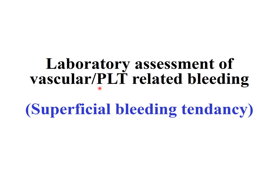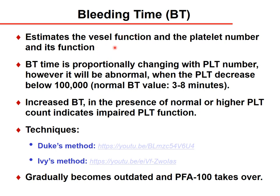The laboratory assessment of vasculature and platelet-related bleeding usually causes a superficial bleeding tendency. The bleeding time estimates vessel function and platelet number and function, and changes proportionally with platelet count — becoming abnormal when platelets decrease below 100 giga per liter. Normal bleeding time is between 3 and 8 minutes. Spontaneous bleeding or petechiae occur when the platelet count decreases below 50 giga per liter, or further down to 30 or 20 giga per liter. The first petechiae appear in the lower extremities where hydrostatic pressure is highest.